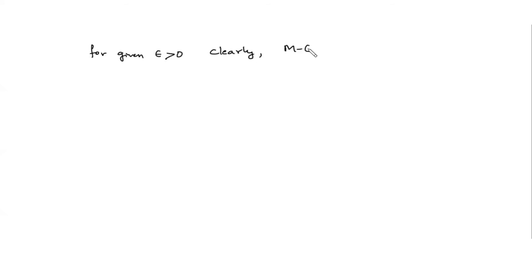For a limit point, we require to find an open interval — a neighborhood — whose deleted intersection with S is non-empty. So for a given epsilon greater than 0, clearly M minus epsilon is not an upper bound of the set S.